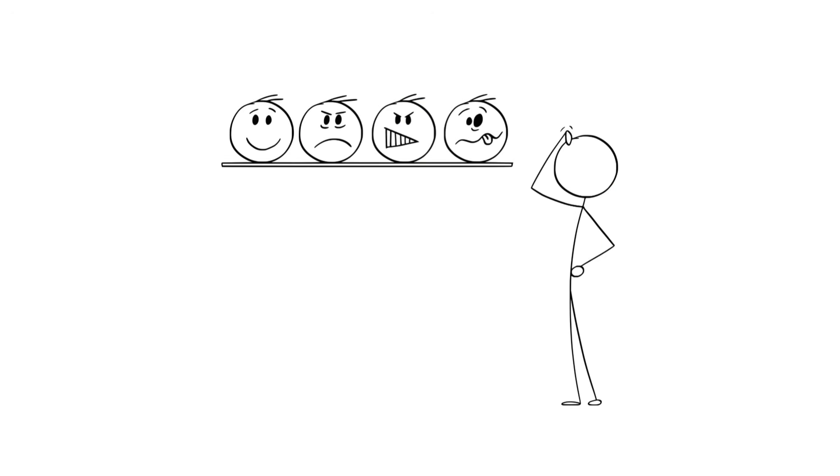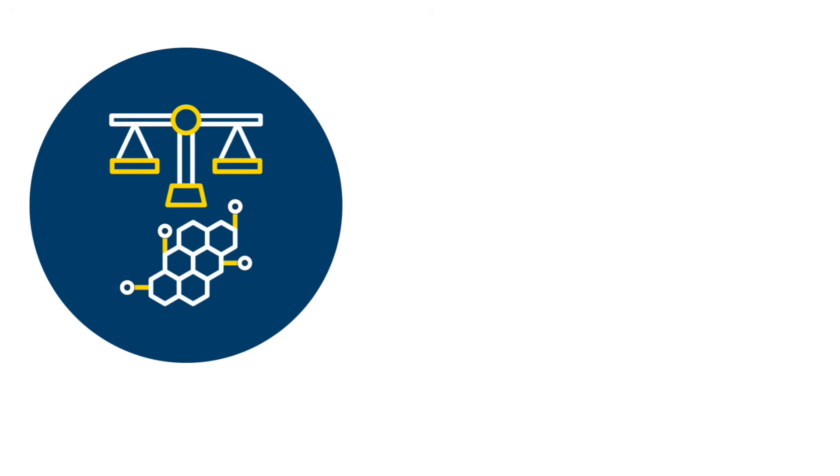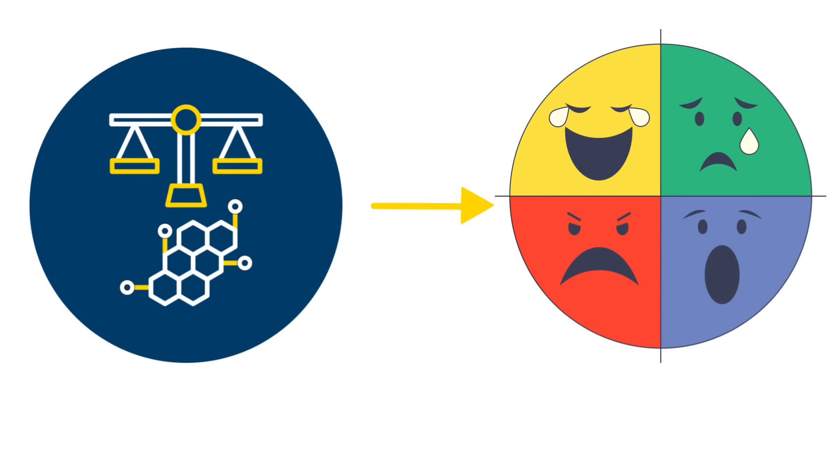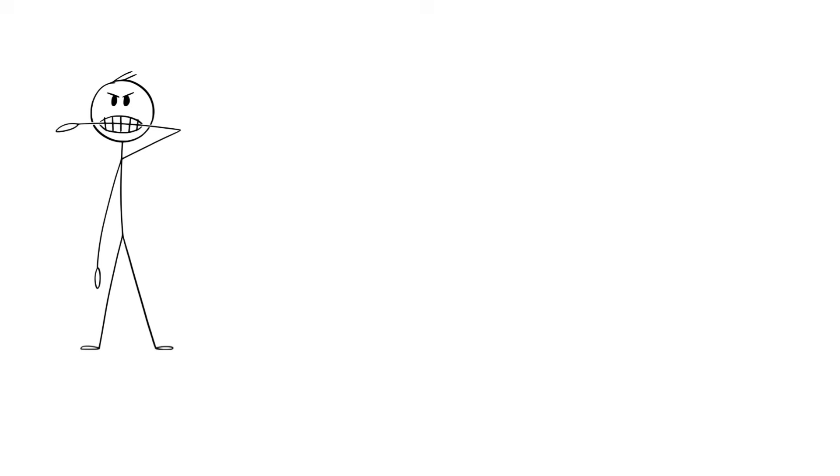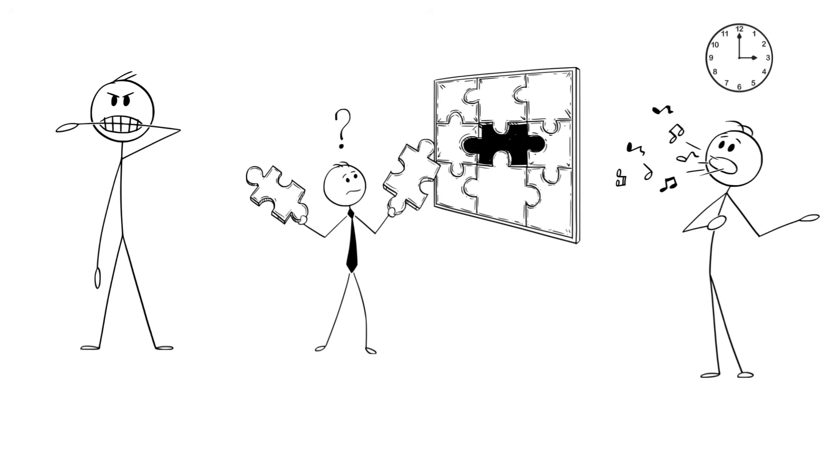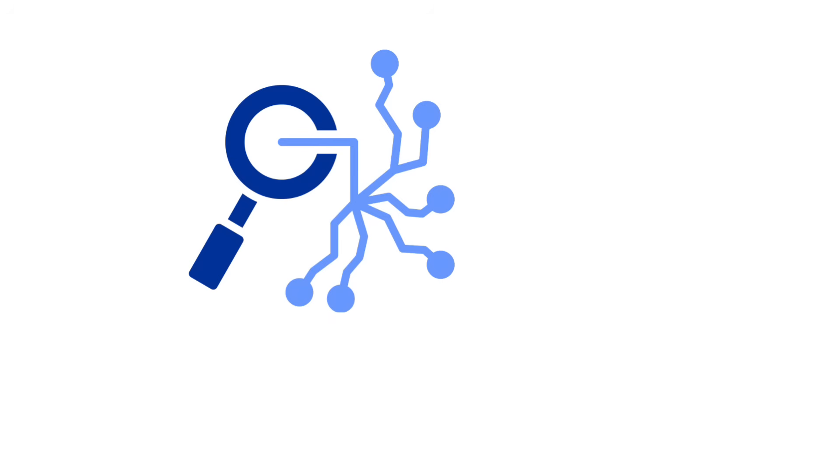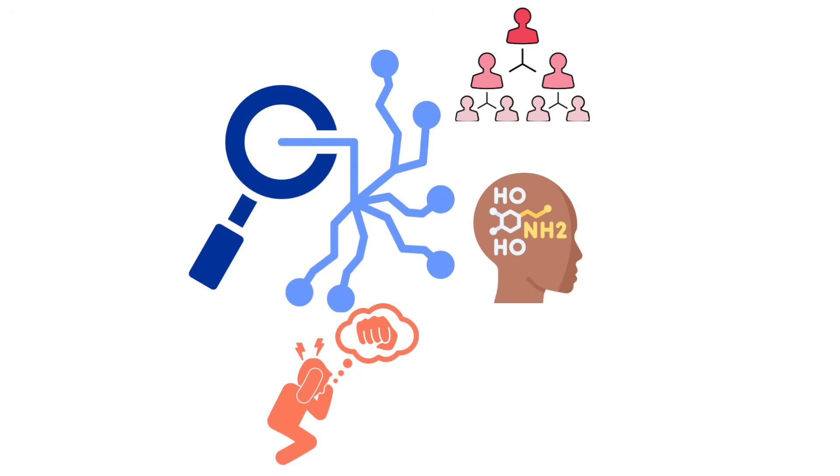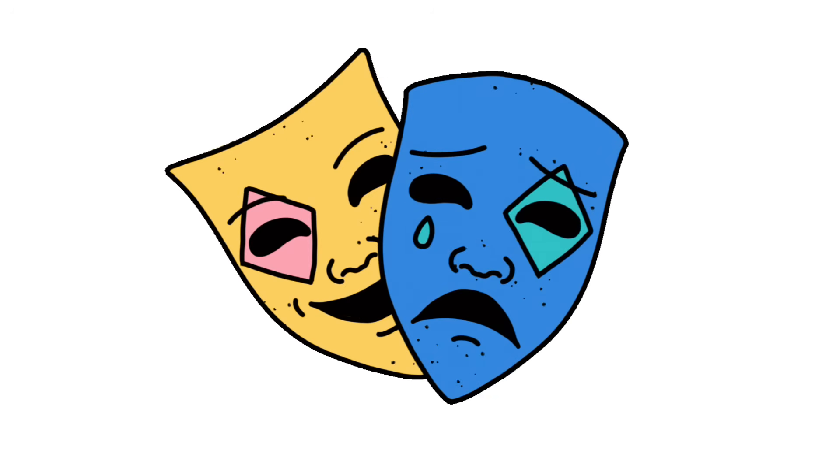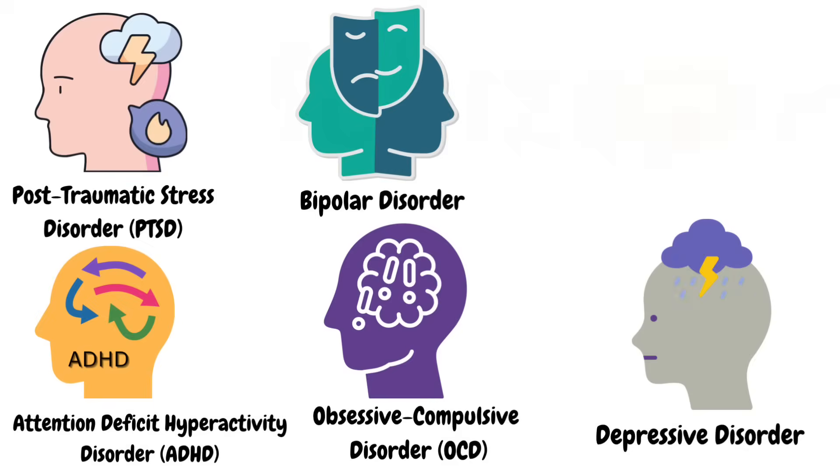This isn't just mood swings. It's a chemical imbalance that throws your emotions into chaos. And sometimes it brings along friends like irritability, poor decision-making, and spontaneous karaoke sessions at 3 a.m. Bipolar disorder affects millions of people and has real roots: genetics, brain chemistry, and sometimes past trauma. It's not about being dramatic, and you can't just shake it off with a dance playlist and a smoothie.